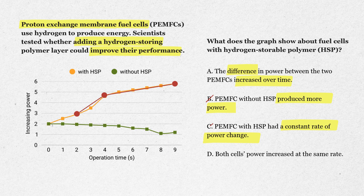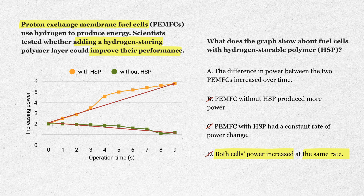Option D: both cells' power increased at the same rate. Definitely not — one increased, the other decreased. So the best answer here is A: the difference in power between the two PEMFCs increased over time.